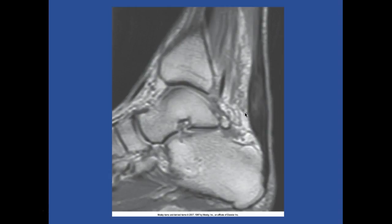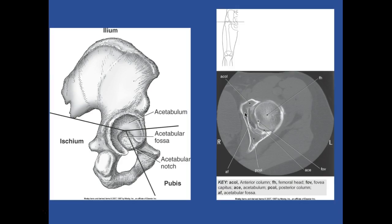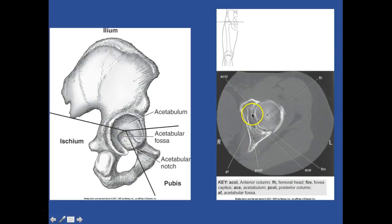This is an MRI T1 of the ankle. Starting with the pelvis and the femur, we'll look at the diagram. We have the ileum, the acetabulum, acetabular fossa, the acetabular notch with the pubis and the ischium. We're looking at the anterior column, the posterior column. This is the head of the femur with the fovea capitis and acetabulum. The acetabular fossa is here.